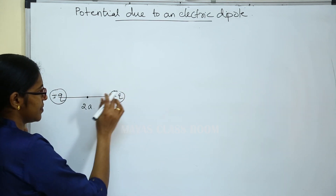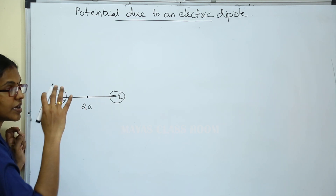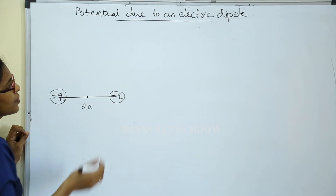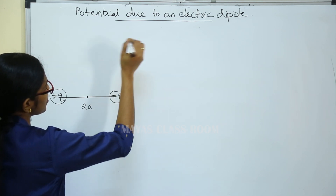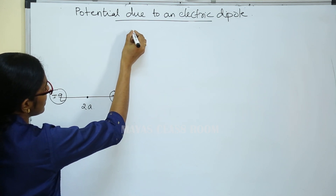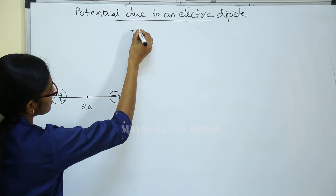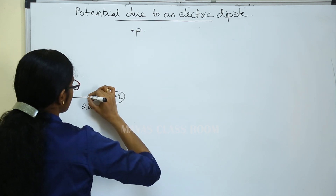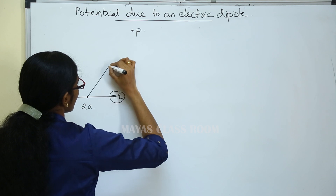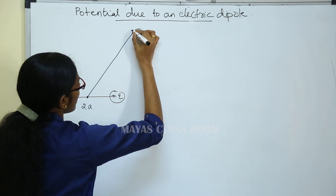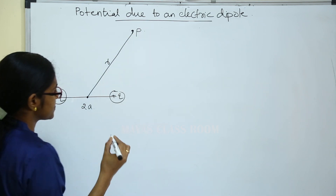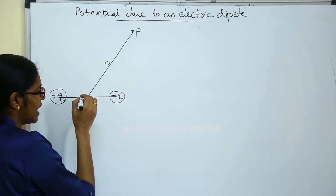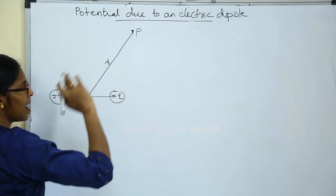If we consider the electric dipole potential, we will consider a point P. The point P is at a distance R from the center of the electric dipole.